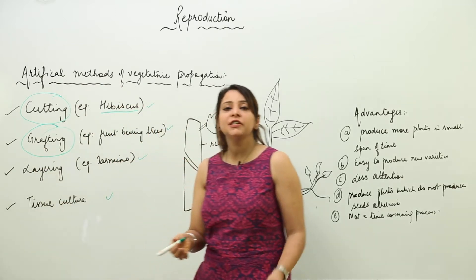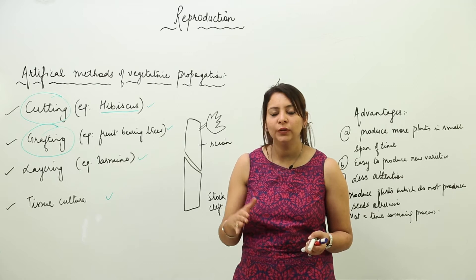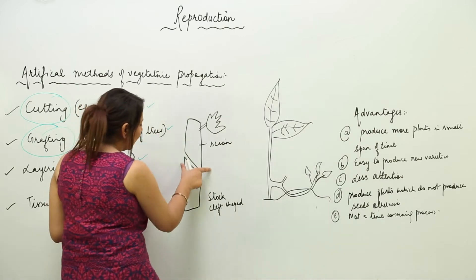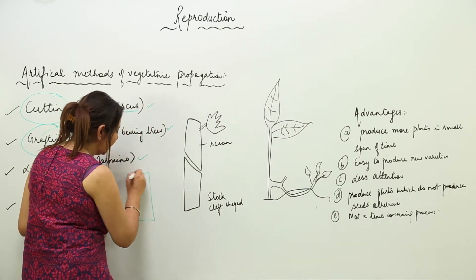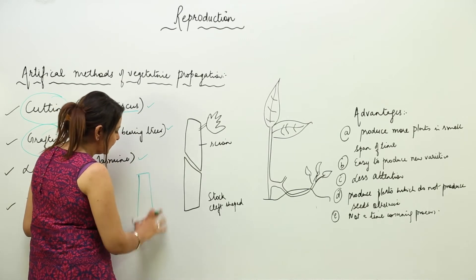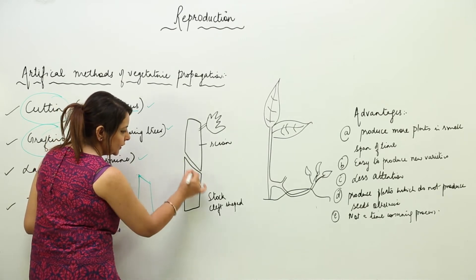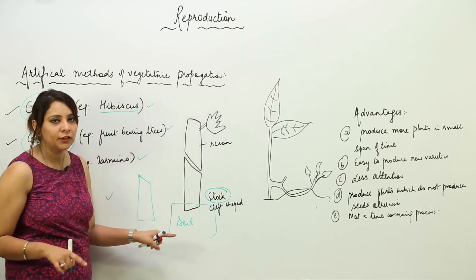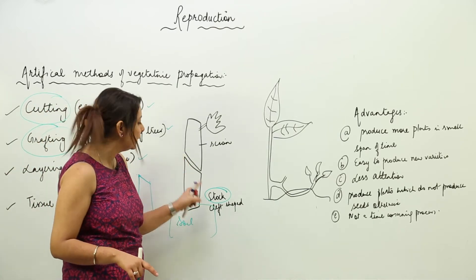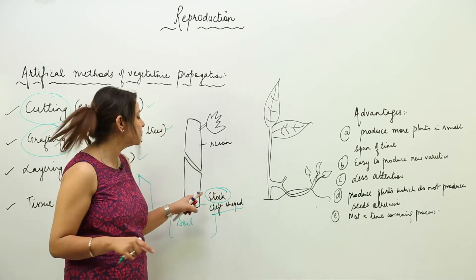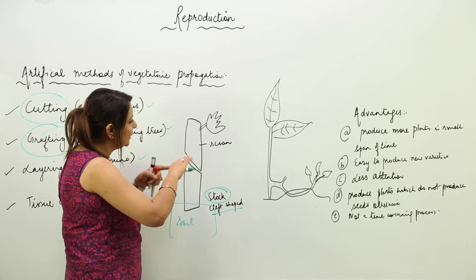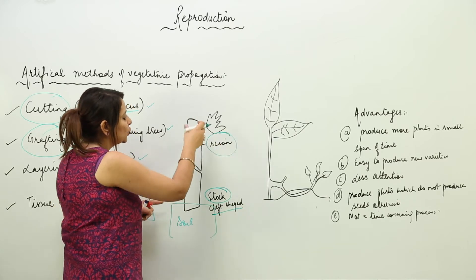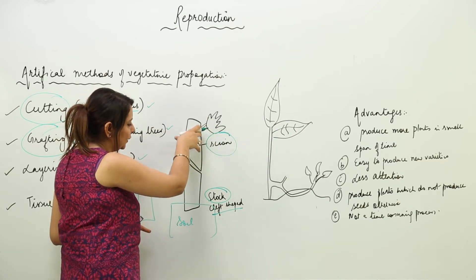Grafting is generally observed in plants of the same species — it can happen only when the species are the same. We take one plant, cut its stem in an oblique, cleft-shaped section — the part remaining in the soil is called the stock. We cut the stem of another plant in a different direction, and that is called the scion. We fix the scion on to the stock.